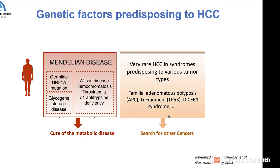We also have very rare HCCs that are part of syndromes predisposing to various tumor types — for example, familial adenomatous polyposis with APC mutation, Li-Fraumeni syndrome with TP53 mutation, and others. These are very rare, but the familial history is very important in all these cases. We must search in these patients not only for the genetic predisposition but also for other cancer locations.